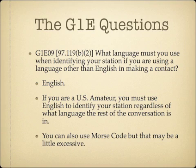What language must you use when identifying your station if you're using a language other than English when making a contact? If you're making a contact in English, Spanish, Portuguese, Italian, or whatever, when it comes time to identify yourself, you must identify yourself as a U.S. amateur in English. You can also use Morse code, but if you just want to cut to the chase, give your call sign in English.